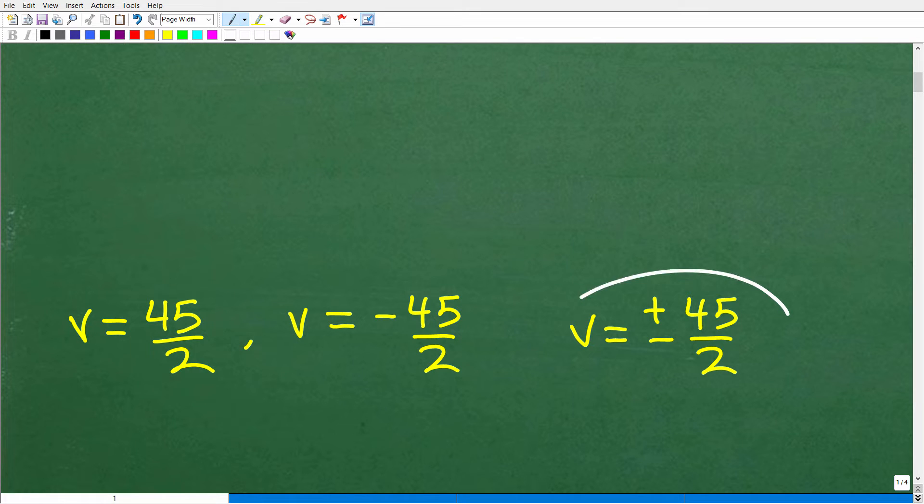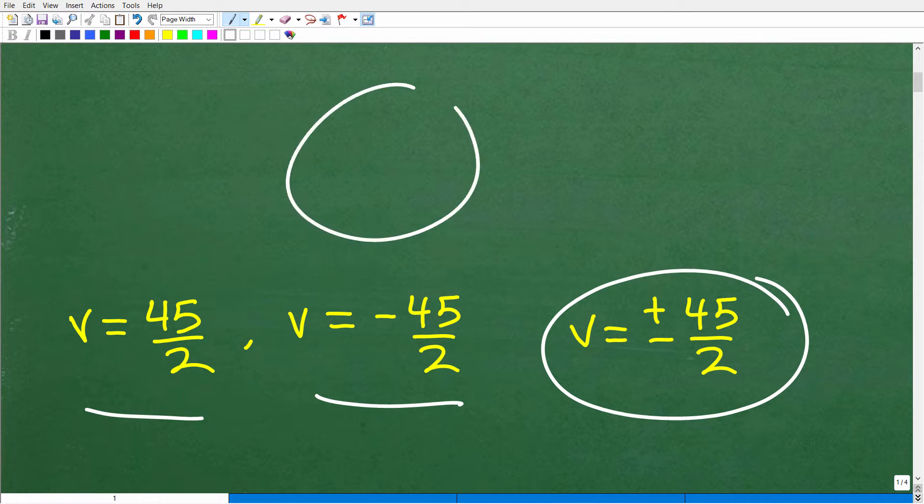And there you go. V is equal to positive negative 45 over 2. Of course, you can write that solution this way as well. So how did you do? If you got this right, that's very impressive. Certainly you definitely earned yourself a nice little happy face, an A plus, 100% and multiple stars. So you can tell your friends and family that you know how to solve an absolute value equation. Nice job. Let's go ahead and get into this.